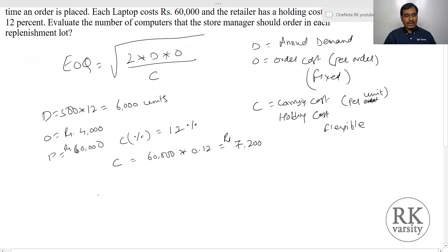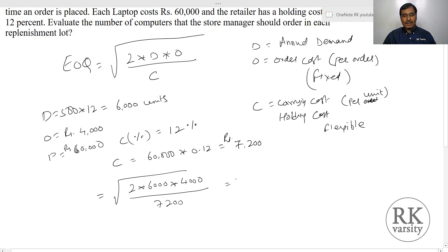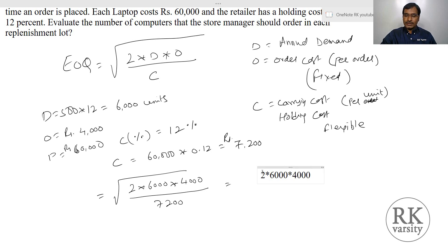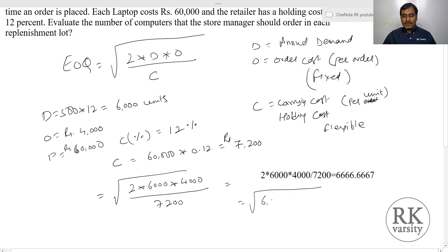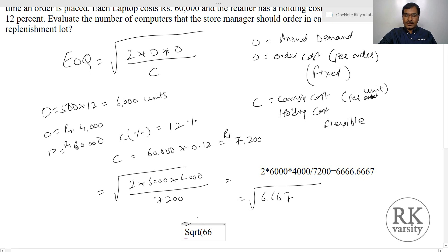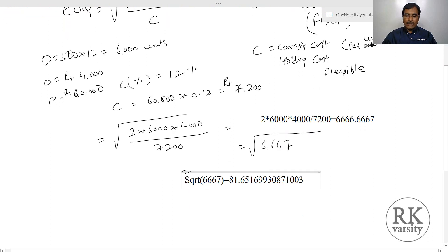We substitute these values in our equation. So this equals to the square root of 2 into annual demand of 6,000 units, times order cost Rs. 4,000, upon carrying cost Rs. 7,200. This equals to the square root of 2 into 6,000 into 4,000 upon 7,200, which equals to the square root of 6,667. This gives us 81.65 or 82 units.